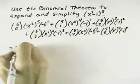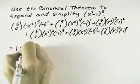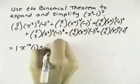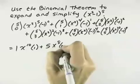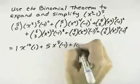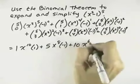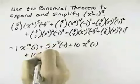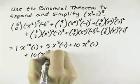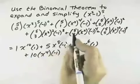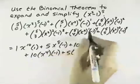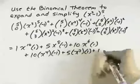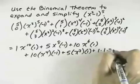Evaluating C(5, 0), we get 1. x squared to the fifth is x to the tenth, and negative 1 to the zero is 1. C(5, 1) evaluates to 5. Then we have x squared to the fourth, which is x to the eighth, and a negative 1. C(5, 2) is 10. x squared to the third is x to the sixth. Negative 1 to the second is 1. C(5, 3) is 10. x squared squared is x to the fourth. Negative 1 to the third is negative 1. C(5, 4) is 5. x squared to the first is x squared. Negative 1 to the fourth is positive 1. C(5, 5) is 1. x squared to the zero is 1, and negative 1 to the fifth is negative 1.